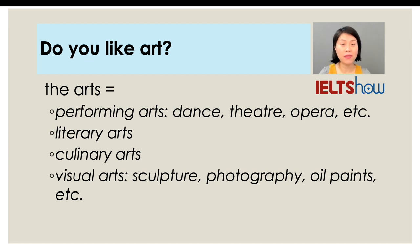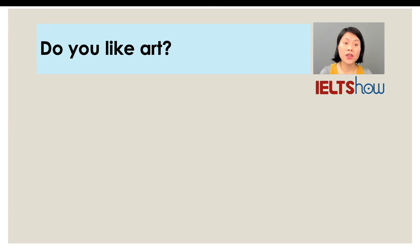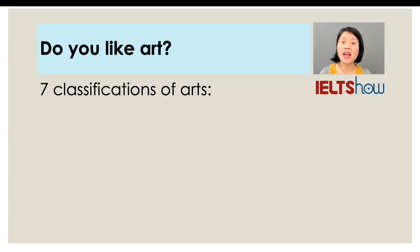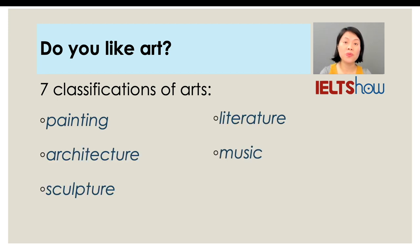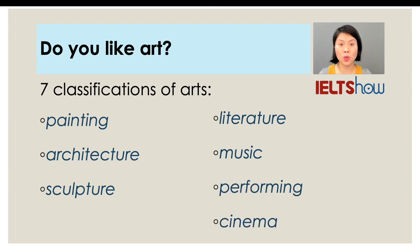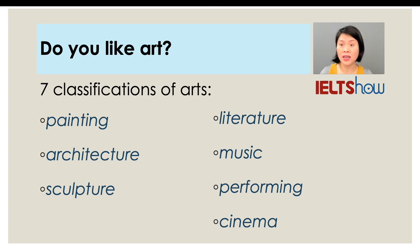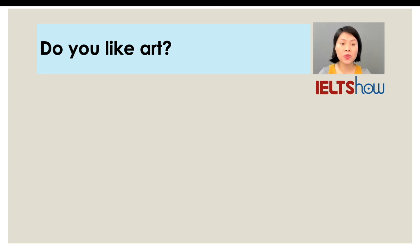You might have known that there are 7 classifications of arts: painting, architecture, sculpture, literature, music, performing, and cinema. So if you get this question — do you like art? — just feel free to express your opinion without having fears of being correct or incorrect. Just make sure that you say exactly what type of arts you are into. For example, this is my answer.